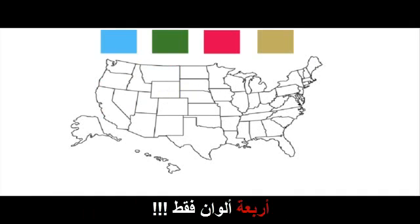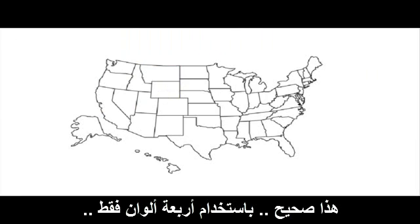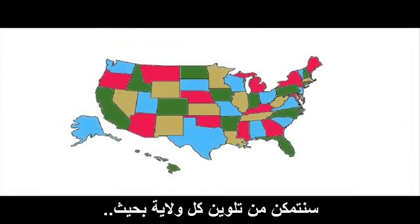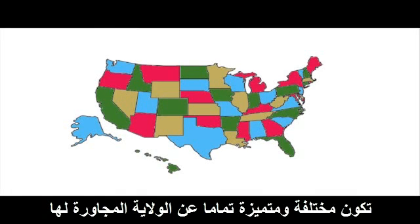The answer is only four. That's right — using only four colors, we can color in each state so that it is clearly distinct from the next state.